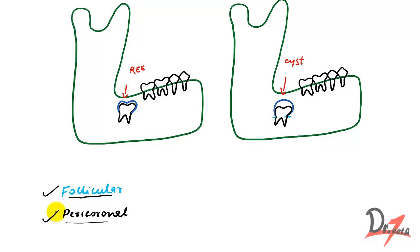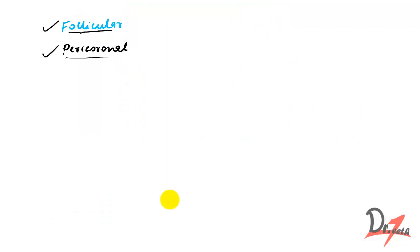The question can be twisted in examinations and you could be asked about follicular cyst instead of dentigerous cyst, so keep that in mind. Anyway, let's move on and talk about the pathogenesis — why does it occur?